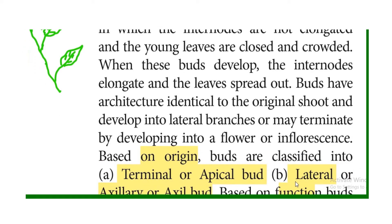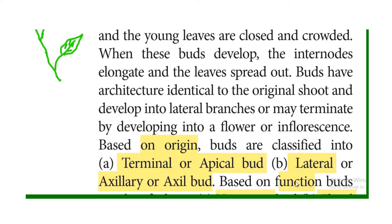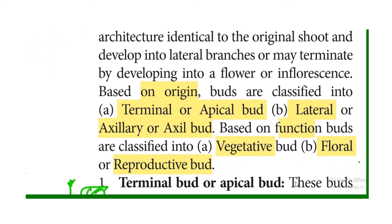Based on origin, buds are classified into two types: terminal or apical buds, and lateral or axillary buds. The stem tip forms terminal or apical buds. The leaf axil forms lateral or axillary buds.